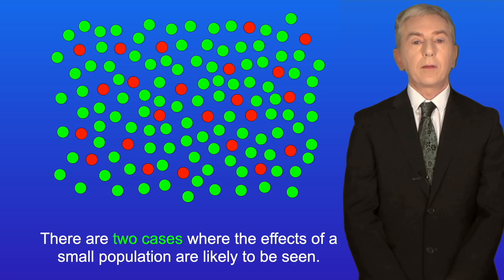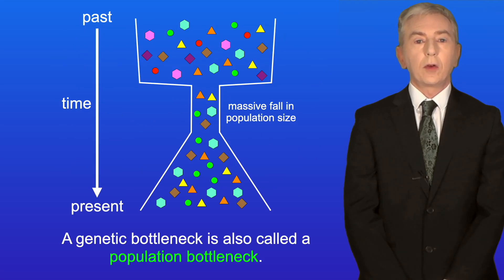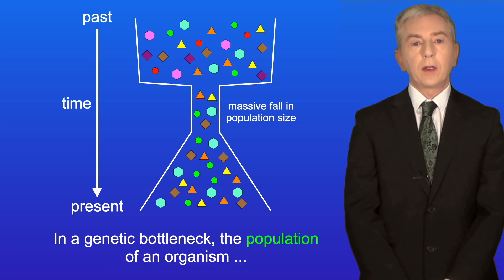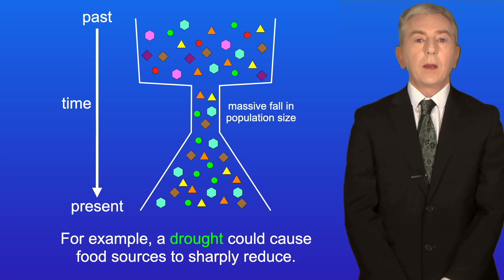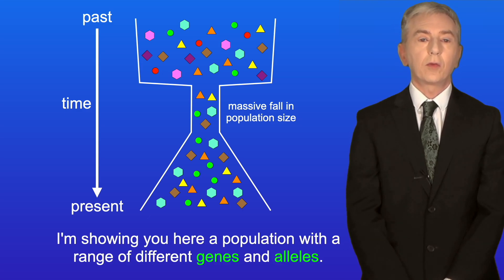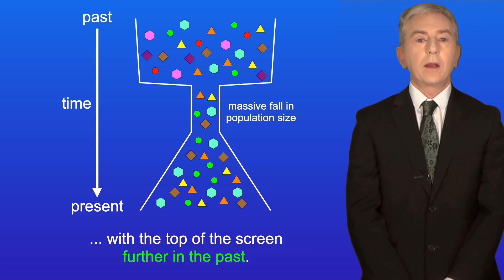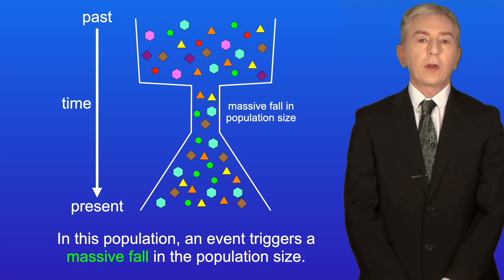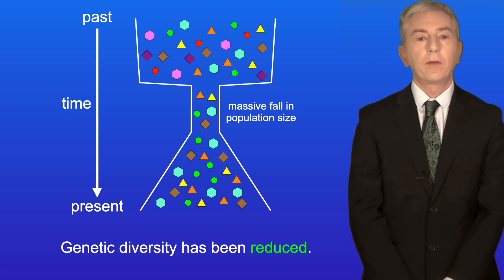There are two cases where the effects of a small population are likely to be seen: a genetic bottleneck and the founder effect. In a genetic bottleneck — also called a population bottleneck — the population of an organism is massively reduced for at least one generation, for example due to a drought causing food sources to sharply reduce. As shown in the diagram, an event triggers a massive fall in population size, permanently removing several alleles and reducing genetic diversity.